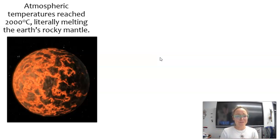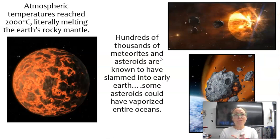During the early years of Earth, our Earth was also bombarded with meteorites and asteroids, literally hundreds of thousands of them striking the Earth, some of which could have vaporized entire oceans.